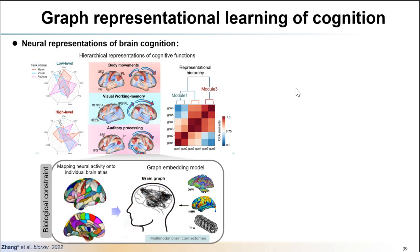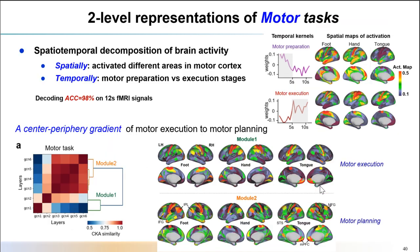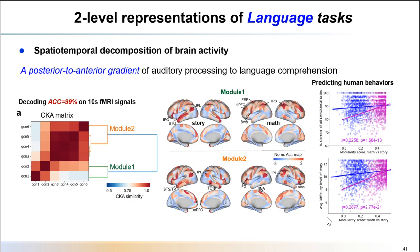We applied a graph-based embedding approach to model task-evoked neural dynamics and generate hierarchical representations of brain cognition. At the low-level representation, the model performs a spatial-temporal decomposition of sensory processing. At high-level representation, the model captures a behaviorally relevant representation that provides better decoding of cognitive states, functional alignment across subjects, and strong brain-behavior associations. For example, we extract two levels of representation of motor tasks, suggesting a central-to-parietal gradient from motor execution to motor planning. Similarly, we extract two-level representation of language tasks, suggesting a posterior-to-anterior gradient from auditory processing to language comprehension. The learned representation also significantly predicts human behaviors, including the correct response of language tasks and the language difficulty levels.